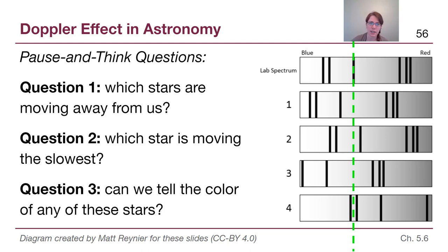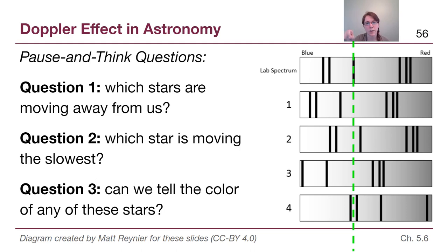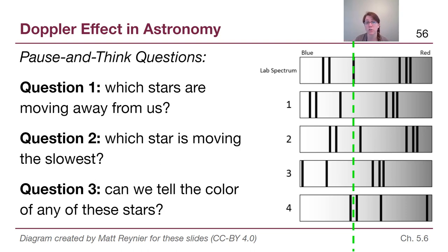I've drawn a dashed line to help us out. The first question: which stars are moving away from us? Step one is to remember that moving away means the shift will be towards the red end of the spectrum — a red shift. In the lab spectrum, there's a pair of lines, then a line by itself, then three lines grouped together. I've drawn a vertical line at that single line so we can more easily tell how the change has happened. In star one, the whole pattern has shifted leftwards towards the blue side — it is moving towards us. In star two, the pattern has shifted a little to the right towards the red side, so that star is moving away from us.